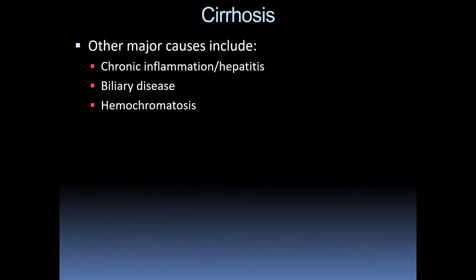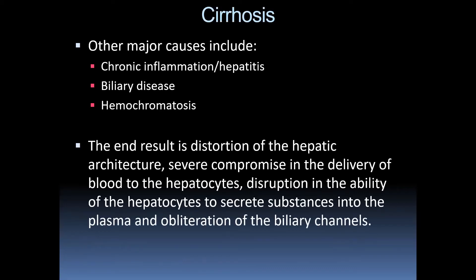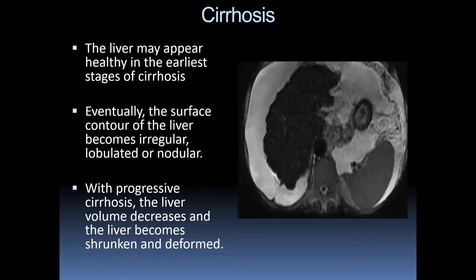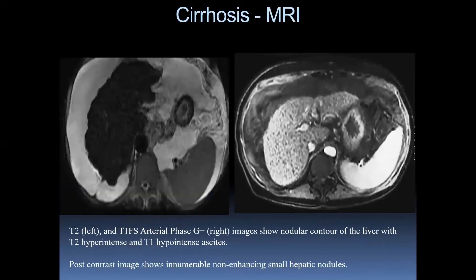Other major causes of cirrhosis include chronic inflammation, hepatitis, biliary disease, and hemochromatosis. The end result is distortion of the hepatic architecture, severely compromising blood delivery to liver cells, disruption of secretory ability, and obliteration of biliary channels. The liver may appear healthy in early stages, but eventually the surface contour becomes irregular, lobulated, or nodular. With progressive cirrhosis, liver volume decreases and it becomes shrunken and deformed. On T2 and T1 post-contrast images we see nodular contour, ascites, and innumerable small non-enhancing hepatic nodules.